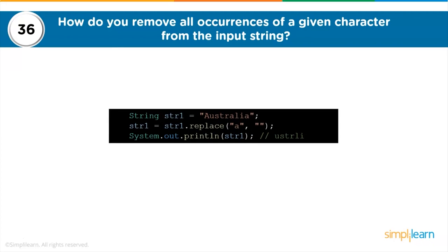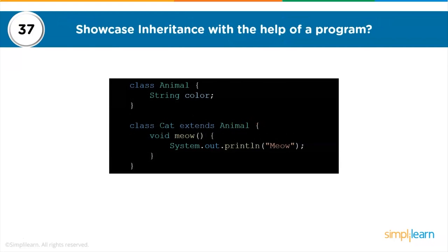The 36th question: how do you remove all occurrences of a given character from a string? Use the built-in string method replace to replace a character with any other character, including symbols and white spaces. The 37th question: showcase inheritance with a program. The class Cat inherits the property color from class Animal by extending the parent class Animal. A class can have more parent classes if it wishes to inherit their properties as well.